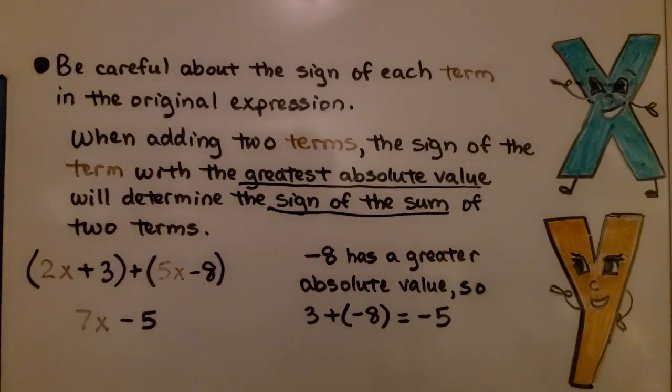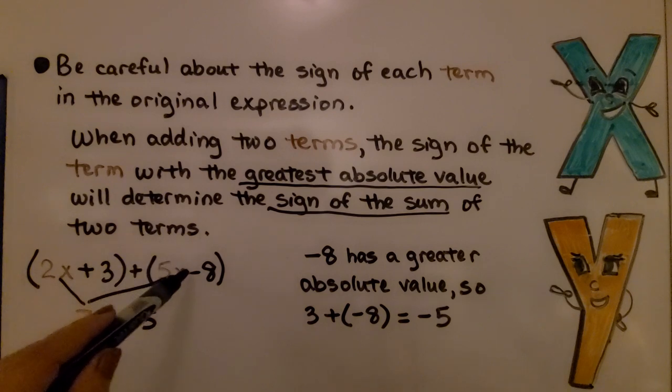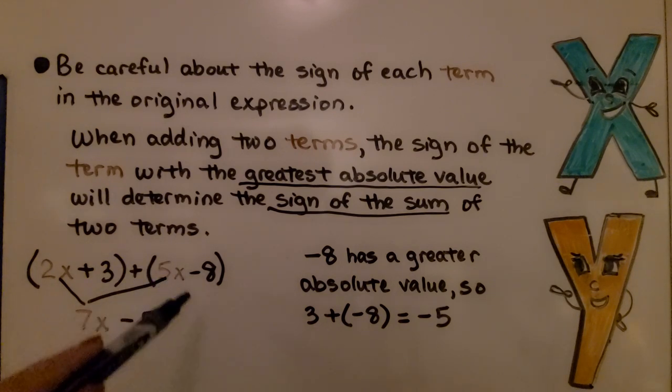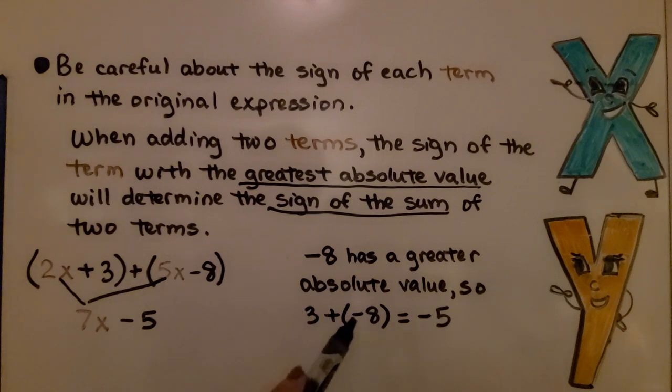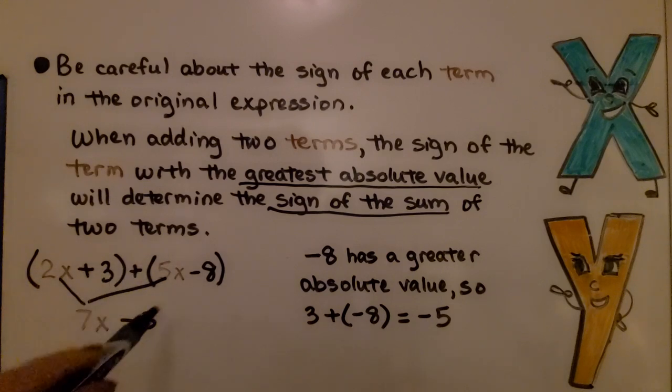If we have 2x plus 3 plus 5x minus 8, well, we have 2x and 5x. That makes 7x. And here we have a positive 3 added to a negative 8. Well, the negative 8 has a greater absolute value. And 3 plus negative 8 is equal to negative 5. Do you notice we're not using this plus sign? We're using the sign of the greater absolute value, the negative 8. We have 7x minus 5.